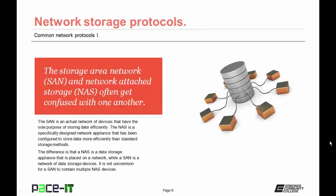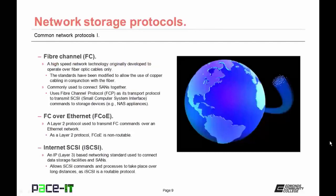We're going to start with fiber channel, a high-speed network technology originally developed to operate over fiber optic cables only, with standards since modified to allow copper cabling as well. It's commonly used to connect storage area networks together. Fiber channel uses fiber channel protocol, or FCP, as its transport layer protocol to transmit SCSI—small computer system interface—commands to storage devices, such as transmitting SCSI commands to network-attached storage appliances.